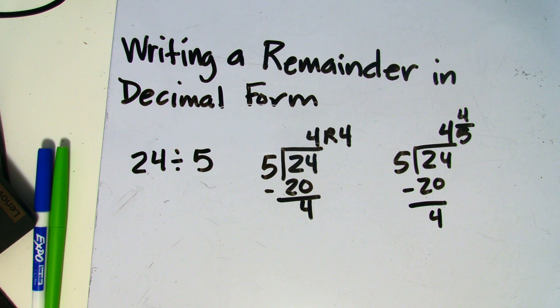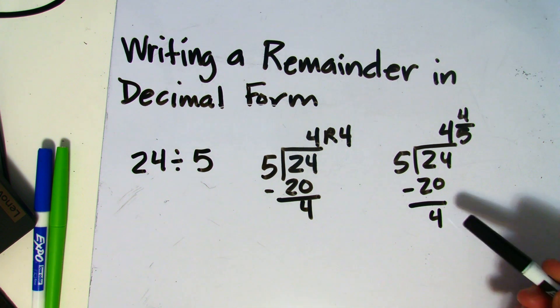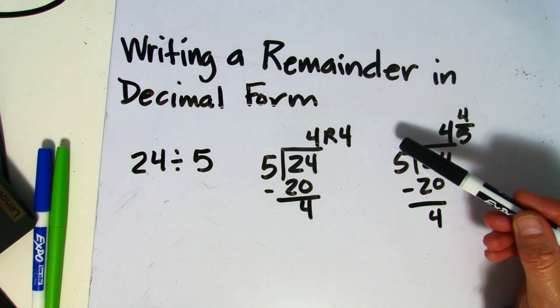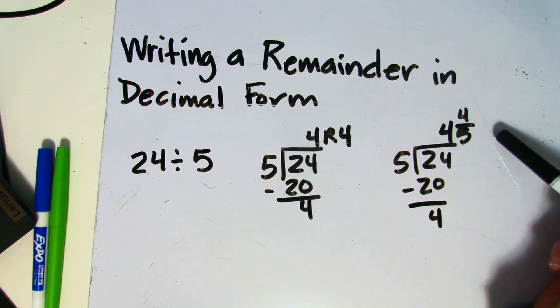So if I divide 24 by 5, I'm going to get 4 whole amounts with a remainder of 4. As a fraction, that remainder becomes the numerator and the denominator is our divisor. So 4 remainder 4 is also equivalent to 4 and 4 fifths.